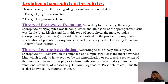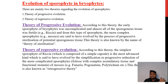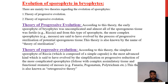The theory of regressive evolution states that the simplest sporophyte of Riccia is the most advanced kind, said to have evolved by the simplification or progressive reduction of the more complicated sporophytes of the mosses. This is also known as the retrogressive theory.